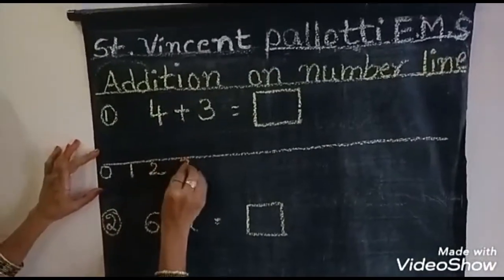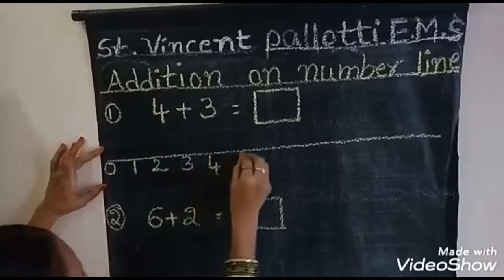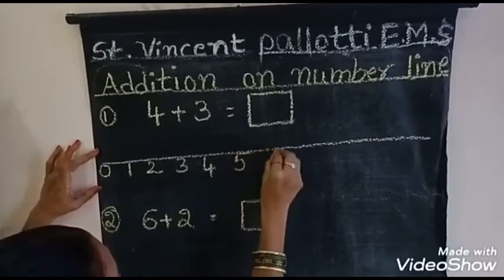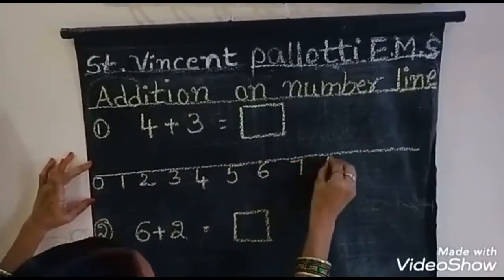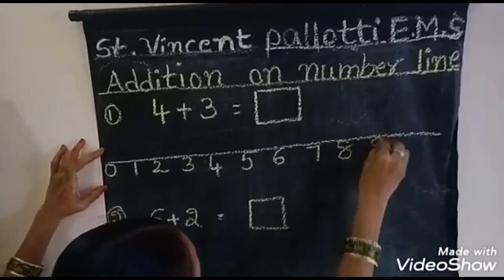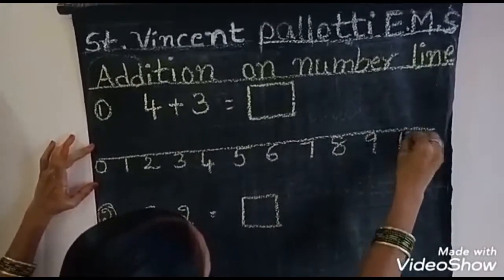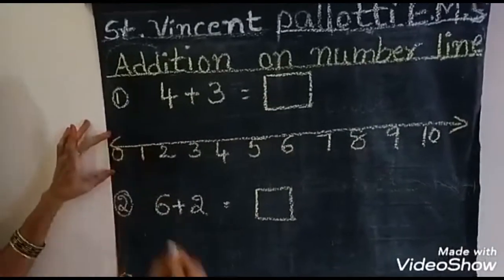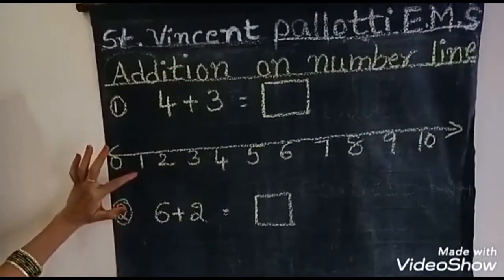3, 4, 5, 6, 7, 8, 9, 10. 0 to 10. Draw like this one scale. Okay.